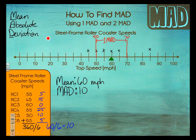Now I can go two MADs, which is just an additional 10. That means I can go all the way up to 80, or all the way down to 40. And that is the window of two MADs.